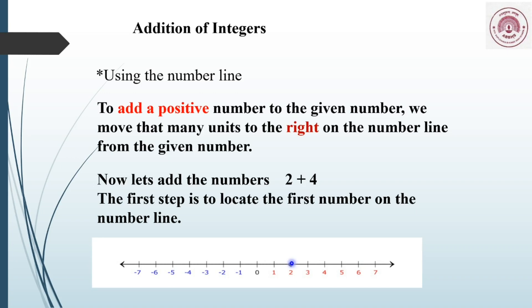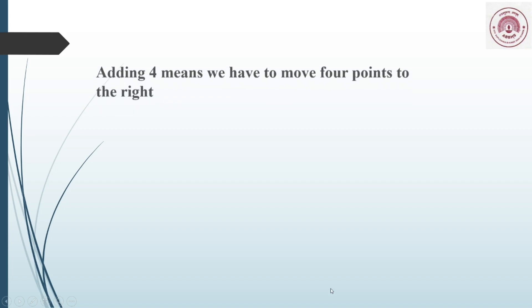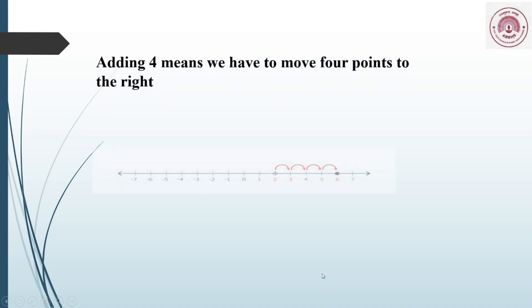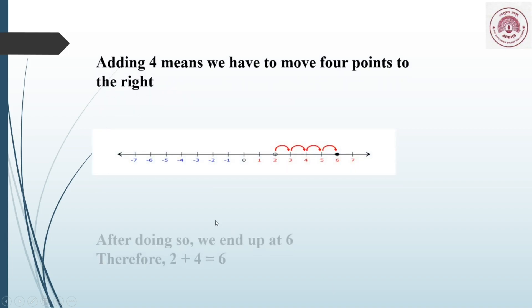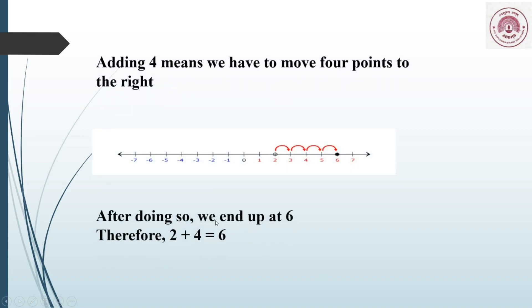So from 2, we take 4 steps to the right: 1, 2, 3, 4. We reach 6. So we end up at 6, which means 2 plus 4 is 6.